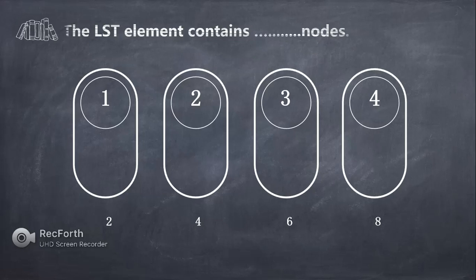The seventh question is: the LST element contains how many nodes? There is a constant strain triangle (CST) and a linear strain triangle (LST). In CST, a triangular element has 3 nodes. In LST, one additional middle node is added on each side, giving 3 plus 3 equals 6 nodes total. So the right answer is the third option: 6.